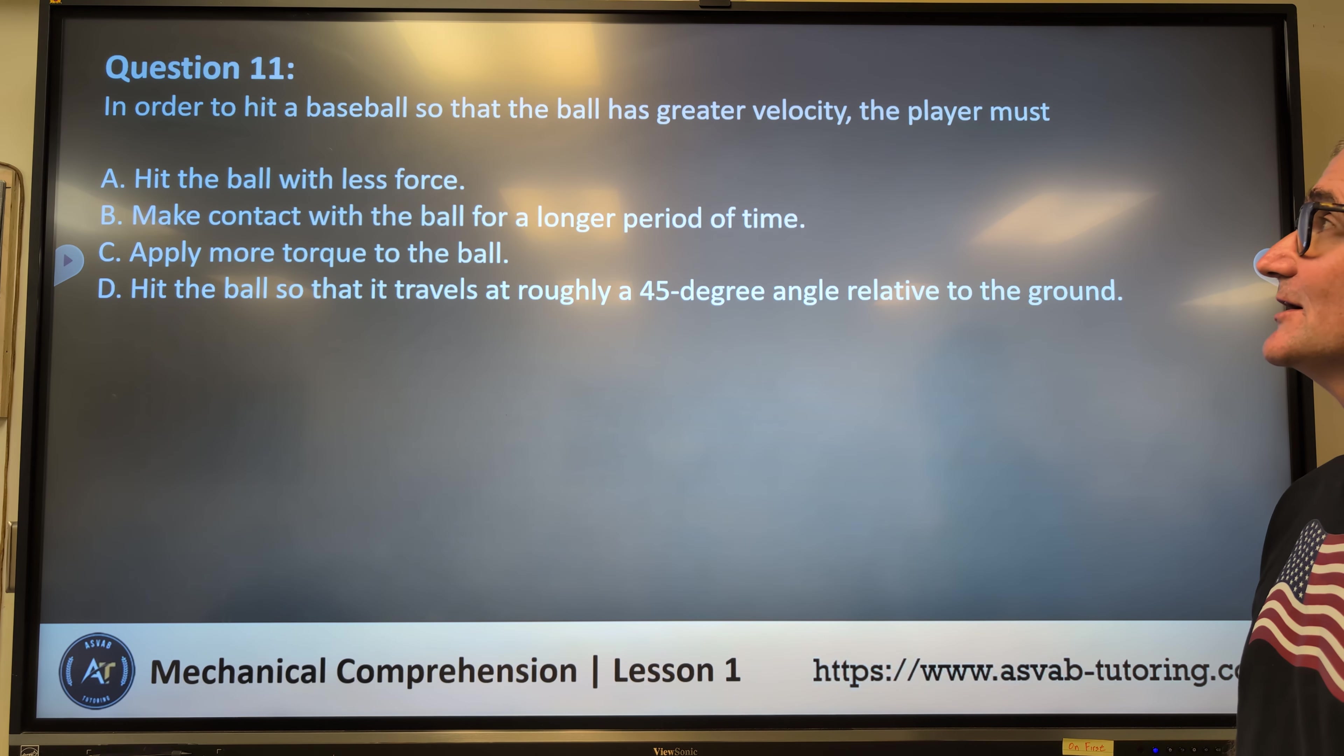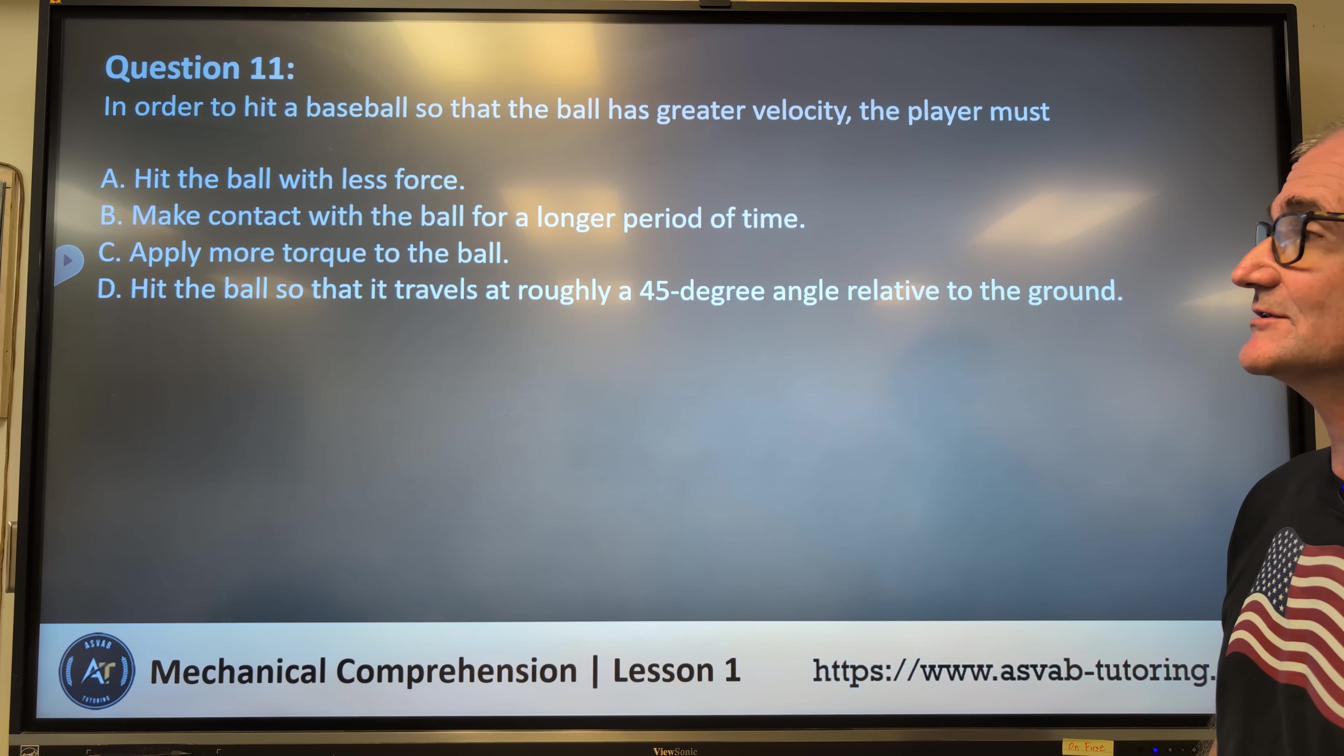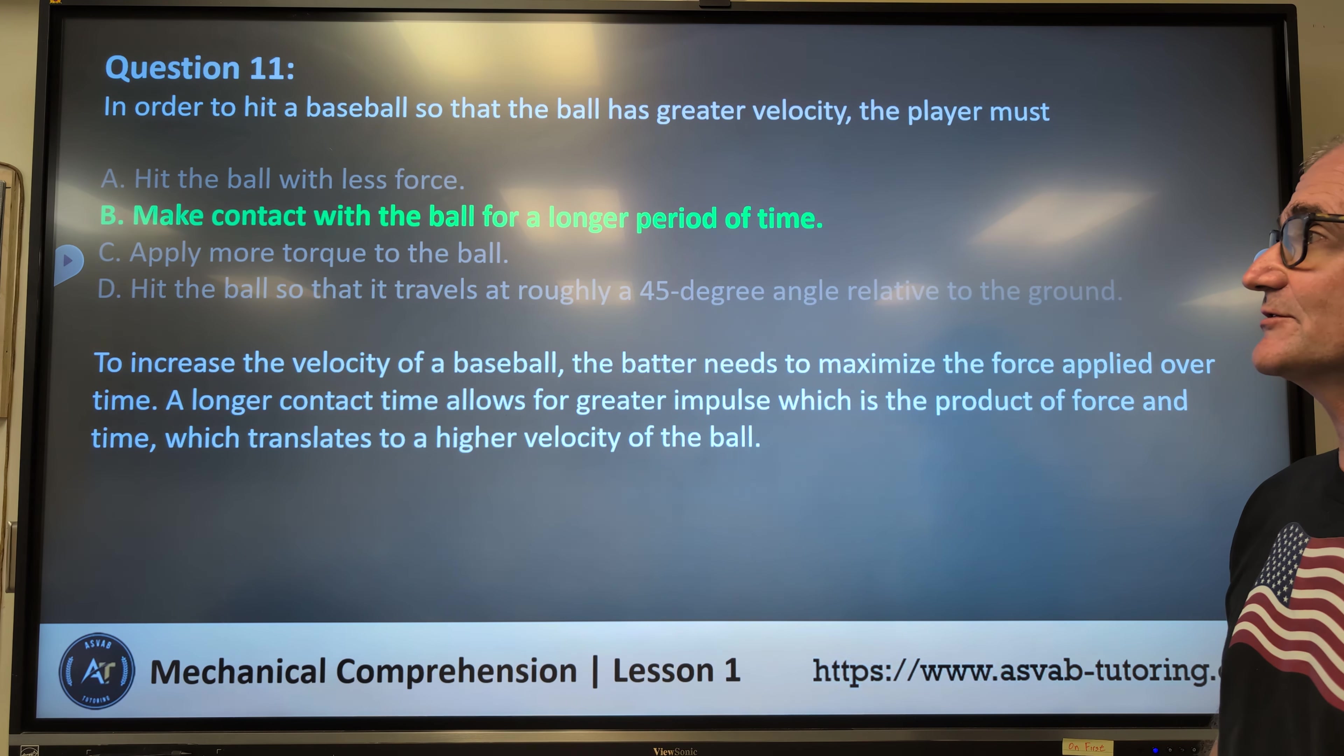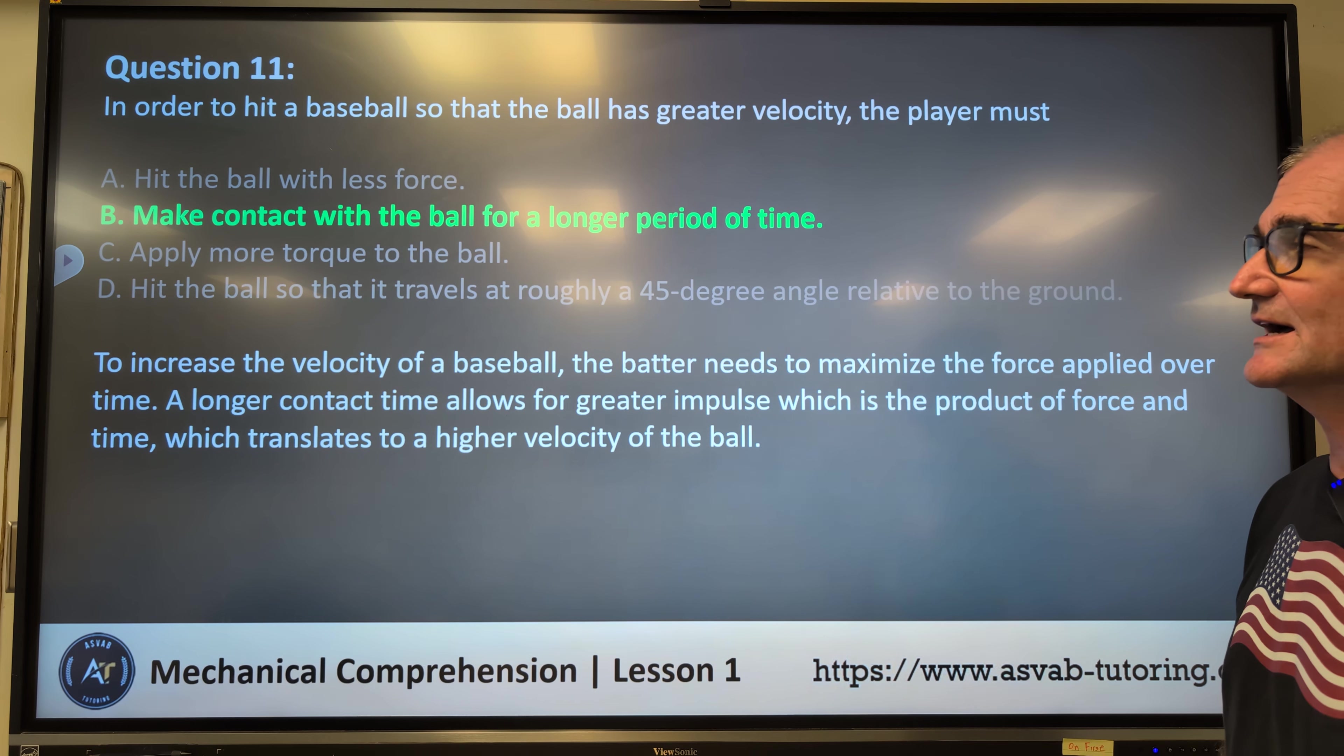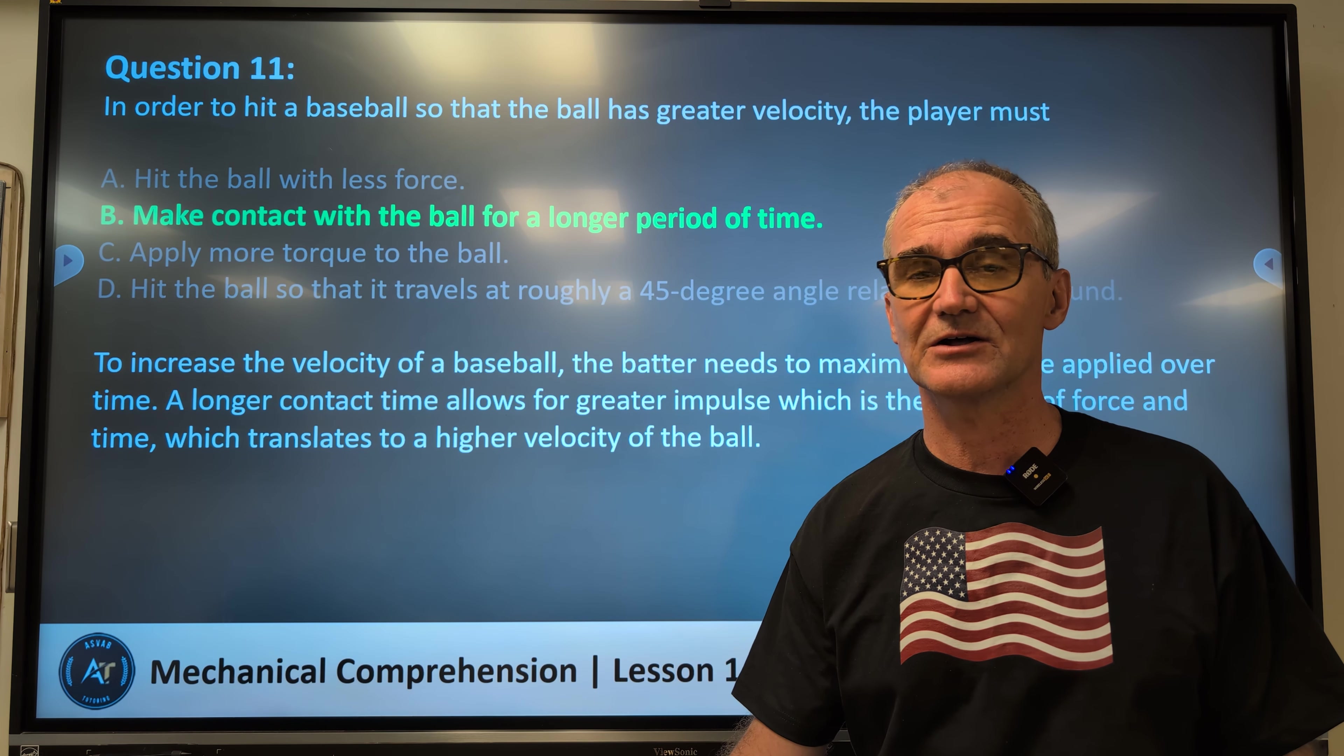In order to hit a baseball so that the ball has greater velocity, the player must: A, hit the ball with less force, B, make contact with the ball for a longer period of time, C, apply more torque to the ball, or D, hit the ball so that it travels roughly at a 45 degree angle relative to the ground. Correct answer is B, make contact with the ball for a longer period of time. To increase the velocity of a baseball, the batter needs to maximize the force applied over time. A longer contact time allows for greater impulse, which is a product of force and time, which translates to higher velocity of the ball traveling.